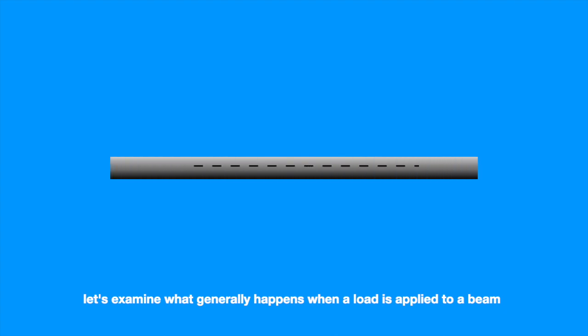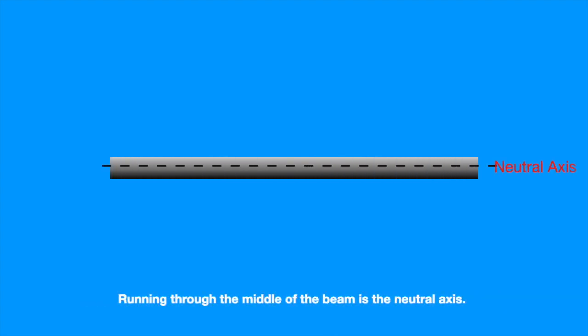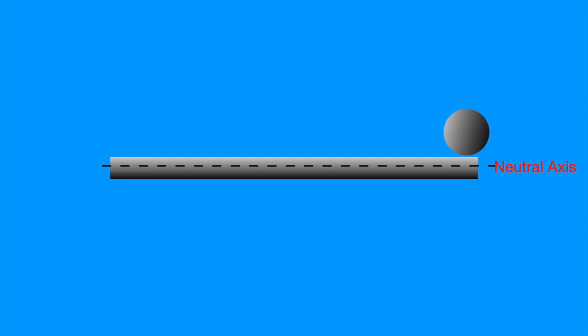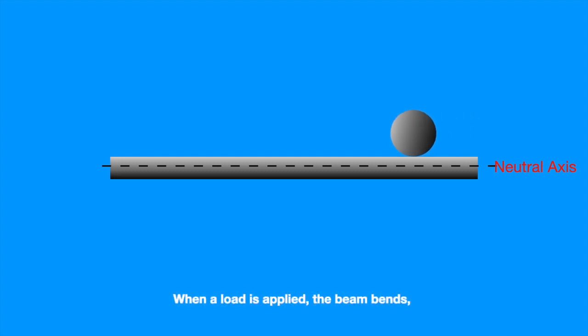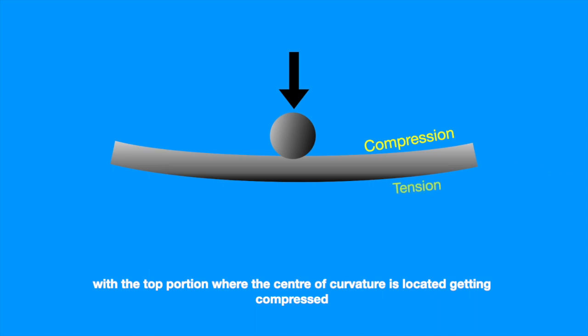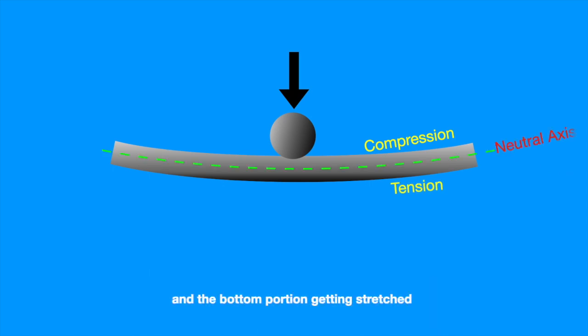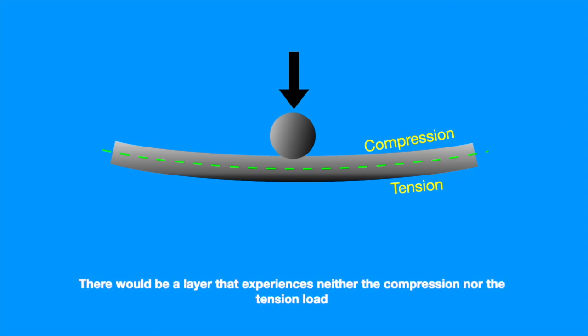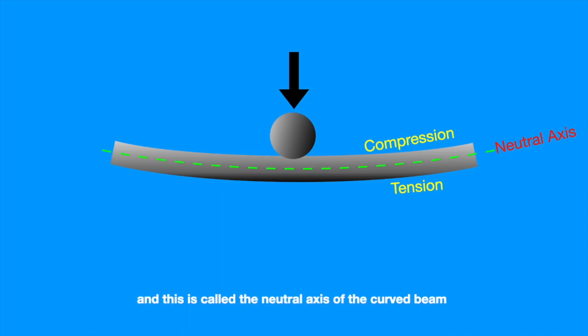Before delving into the cause of the collapse, let's examine what generally happens when a load is applied to a beam. Running through the middle of the beam is the neutral axis. When a load is applied, the beam bends with the top portion — where the center of curvature is located — getting compressed, and the bottom portion getting stretched. There would be a layer that experiences neither compression nor tension, and this is called the neutral axis of the curved beam.